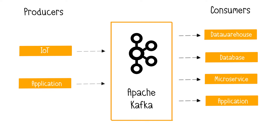Another important concept in Kafka is the notion of events. Reading and writing data in Kafka is done in the form of events, such as a user action on a website, a temperature change, a new financial transaction, and so on.